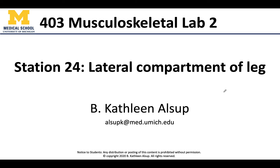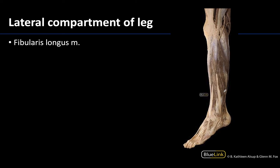Hello all and welcome to station 24. This is Dr. Alsup and we are going to look at the lateral compartment of the leg. You will find when looking at a lateral view of the leg you can actually see quite a bit of the superficial posterior compartment as well. We'll try to identify some of these structures. We know we're looking at a lateral view here mainly because you can see that this is the fifth digit, which is always going to be lateral when talking about the lower limb. So we are looking directly at the lateral compartment.